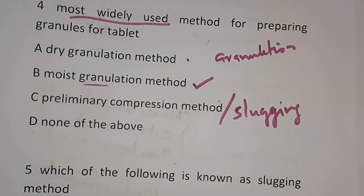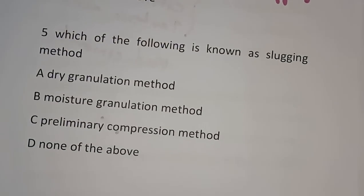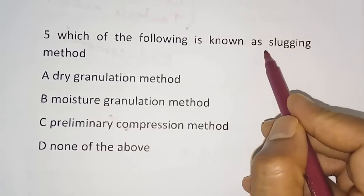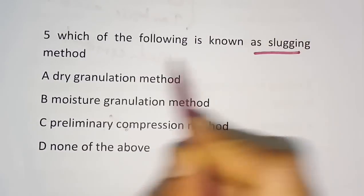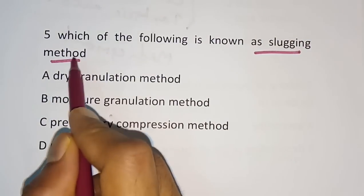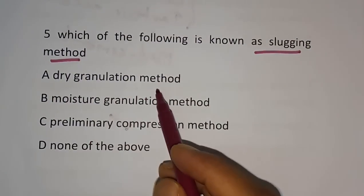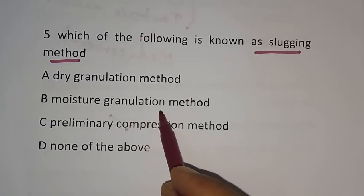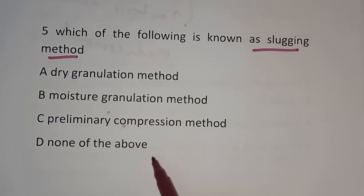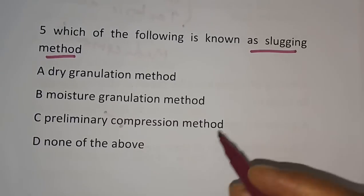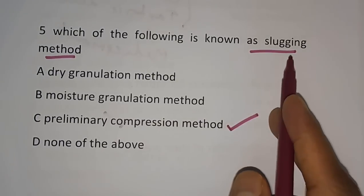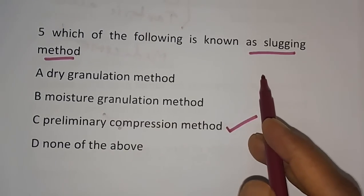Question number 5: Which of the following is known as the slugging method? Options are dry granulation method, moist granulation method, preliminary compression method, or none of the above. The correct answer is preliminary compression method, which is also known as slugging method.